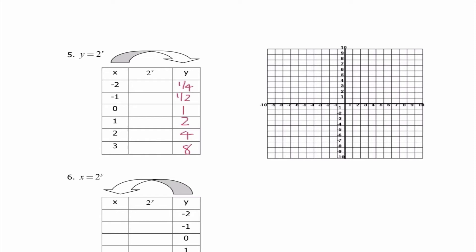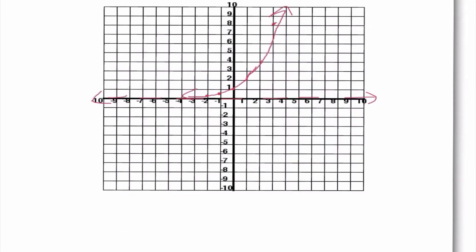Number 5 is exactly the same as number 1, so I just went ahead and copied over those values again. All this arrow is showing us is x is our input and we're substituting it in; y is our output. Let's sketch these on the graph. My asymptote is at y equals 0, domain is from negative infinity to positive infinity, and range is from 0 to infinity. We've seen this a few times now.